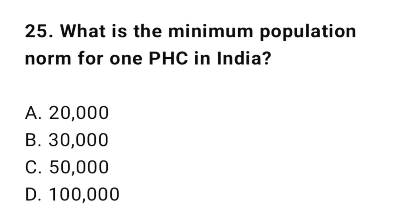Question number twenty-five: What is the minimum population norm for one PHC in India? The correct option is B: 30,000.